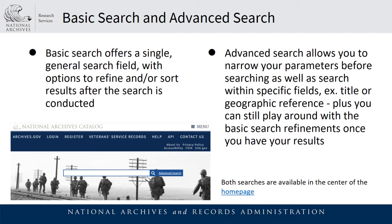For example, you can search within specific fields such as title or geographic reference, and even once the search is complete you can still use the basic search refinements. The asterisk is the wildcard character in the catalog, and you can use AND, OR, and NOT operators in both basic and advanced search.